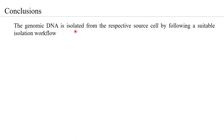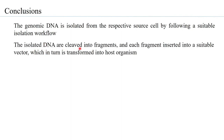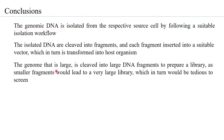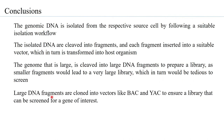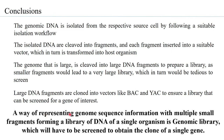In conclusion: genomic DNA is isolated from the source cell using a suitable isolation workflow. The isolated DNA is cleaved into fragments, each inserted into a suitable vector, which is then transformed into a host organism. Large genomes are cleaved into large DNA fragments to keep the library manageable, since smaller fragments would create an enormous library tedious to screen. Large fragments are cloned into BAC or YAC vectors to ensure the library can be screened efficiently for a gene of interest. A genomic library represents genome sequence information as multiple fragments forming a collection of DNA of a single organism, which must be screened to obtain the clone of a single gene.